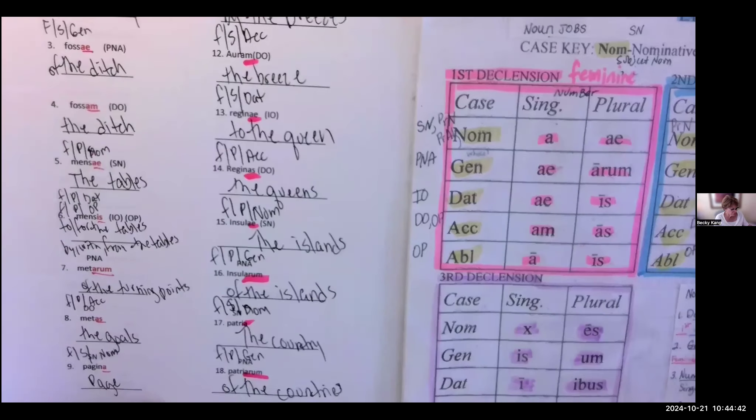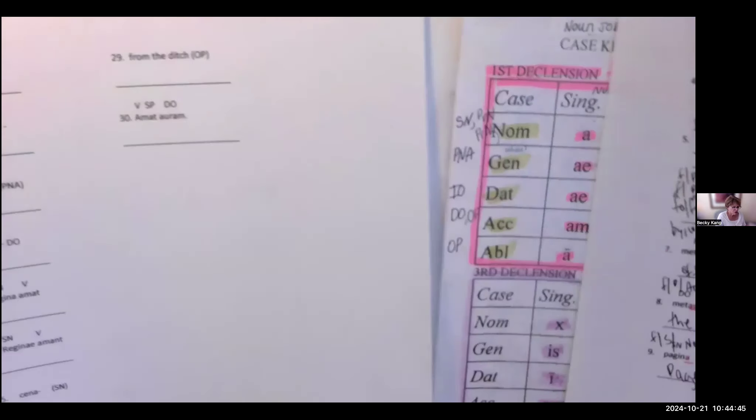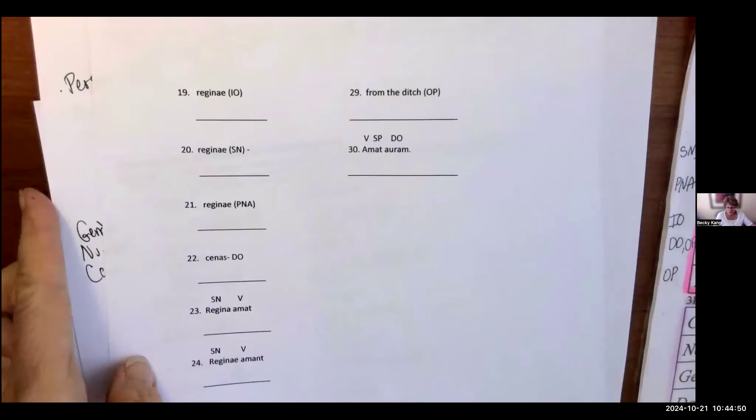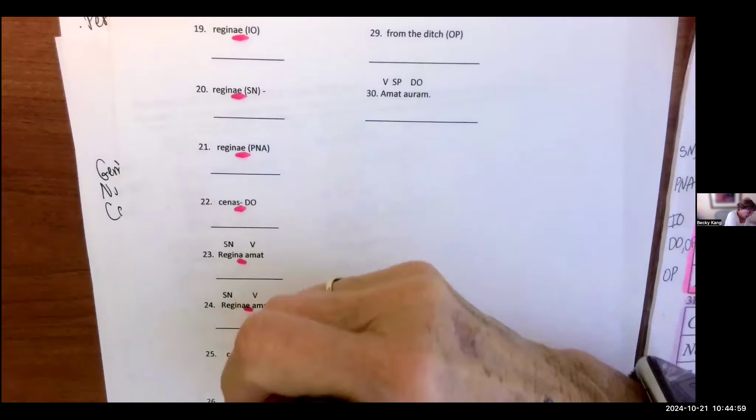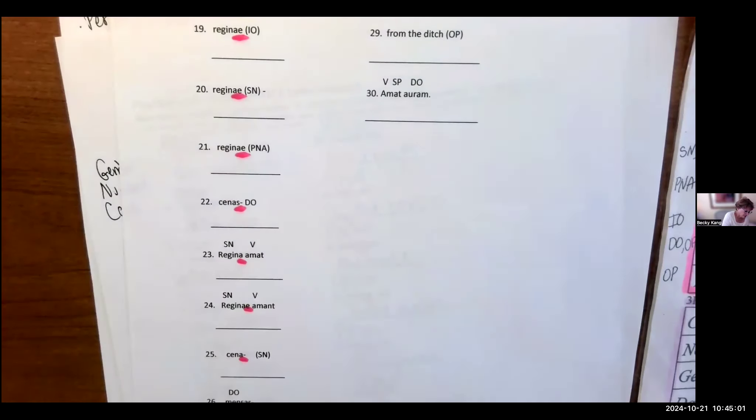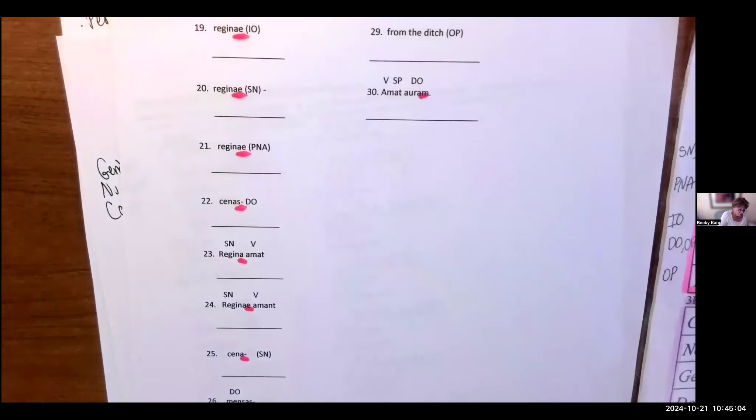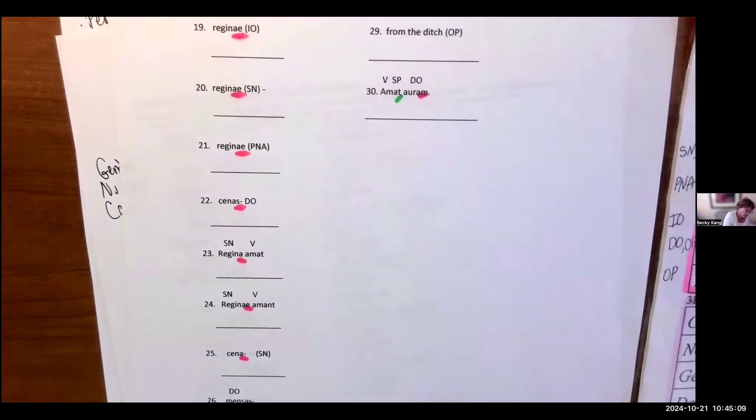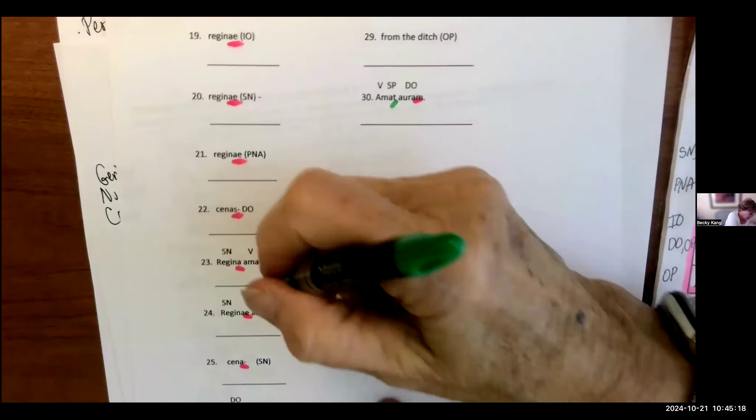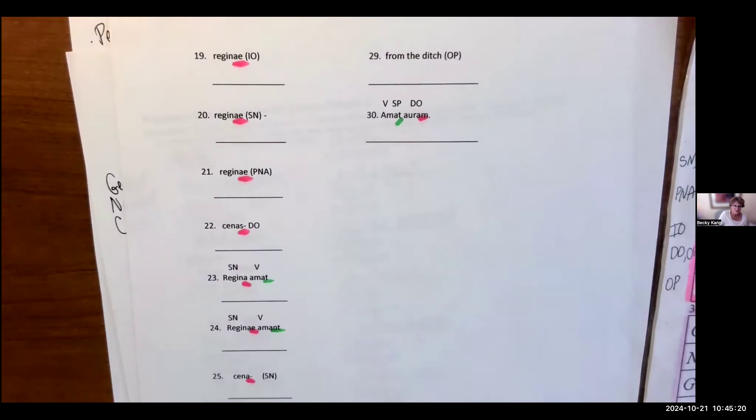All right. We just did the first page. Let me just get the second page. And let's, because you can do these. You can do these. You can totally do these. You see the endings right here. Right? Ae, ae, ae, as. But here's what I want to do. I'm going to go ahead and do with you right now a sentence. And then I'm going to do an English. So here we go.